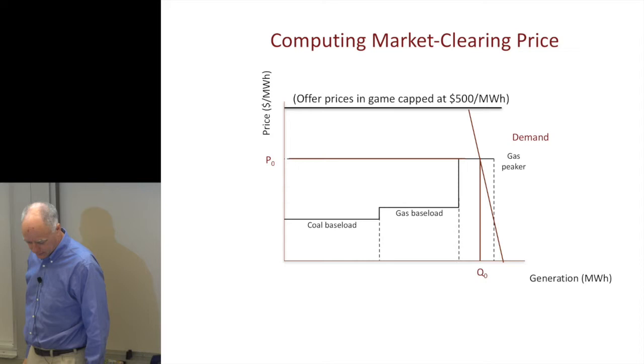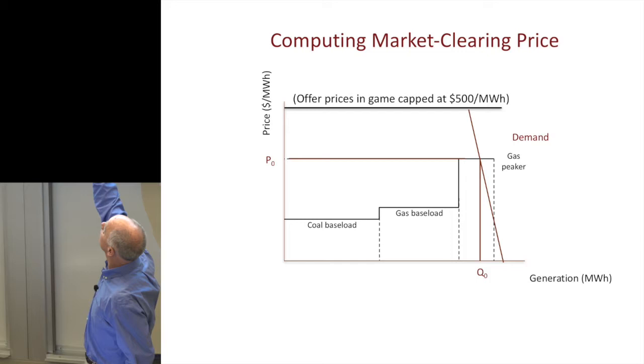What happens is we have demand, and where demand crosses the supply curve, that sets the market clearing price. Pretty simple.